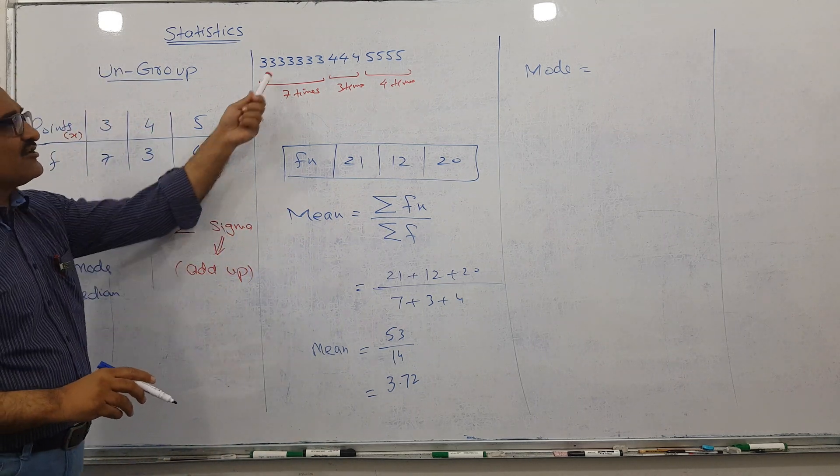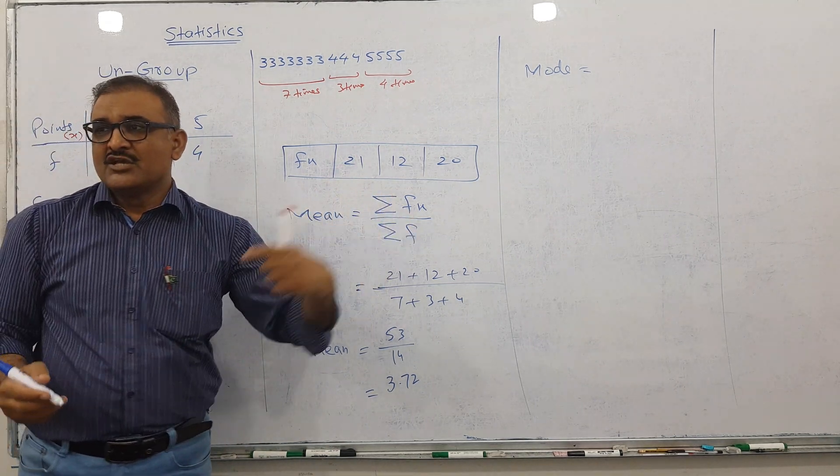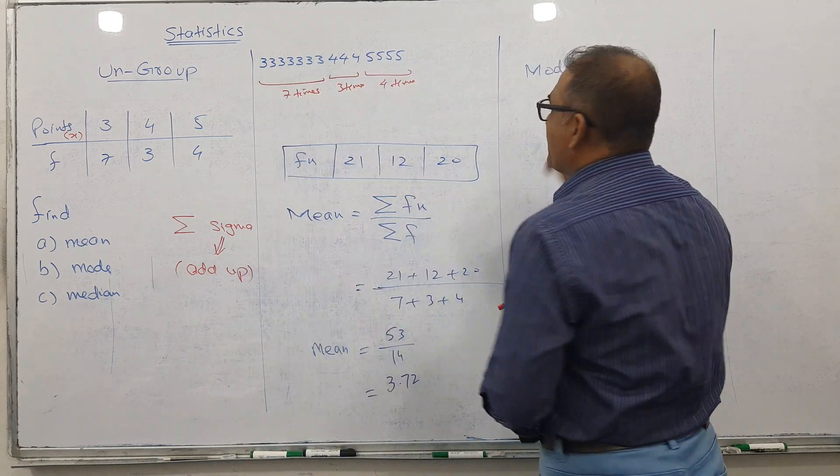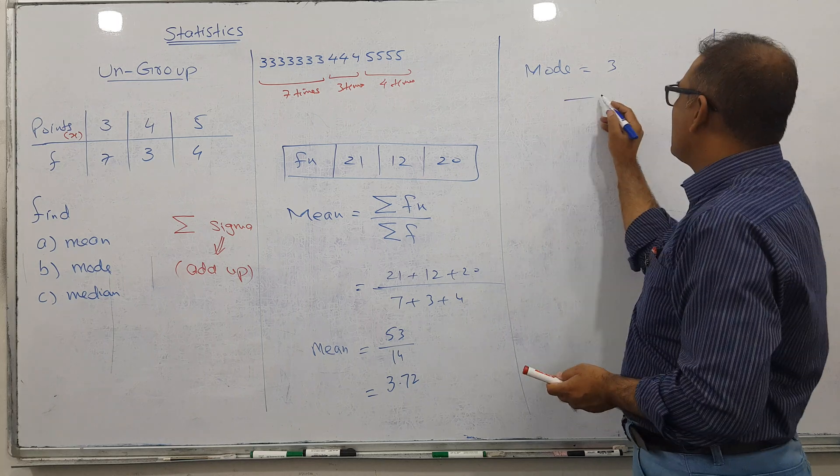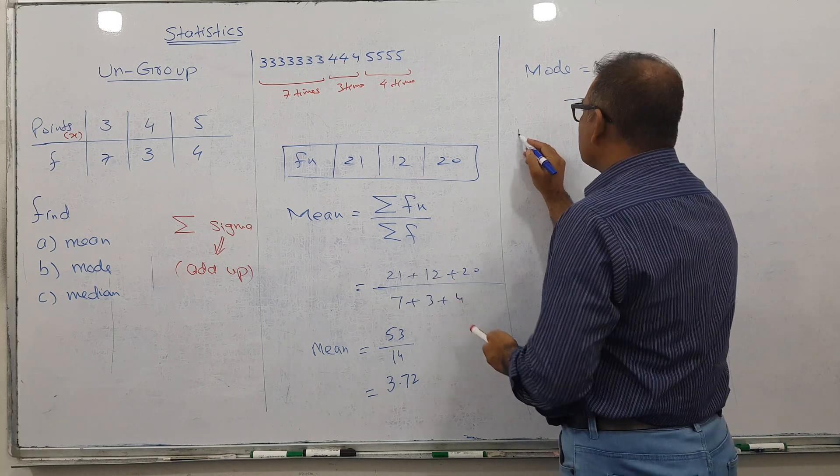Which number repeats the most? Naturally three repeats the maximum times, so the mode is 3. Let's talk about the last part: median.